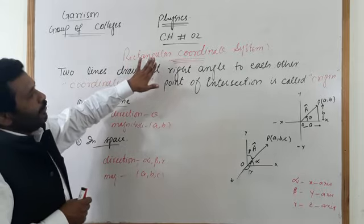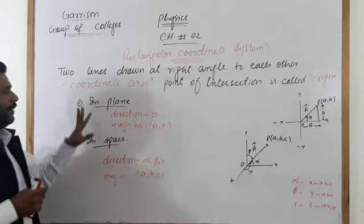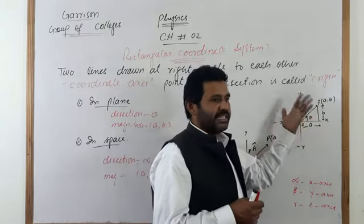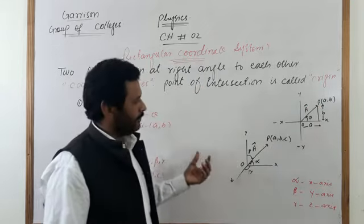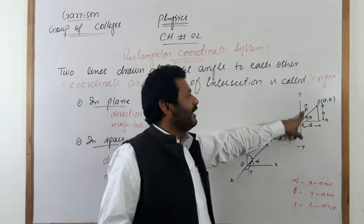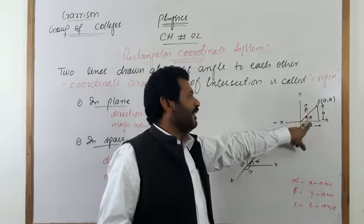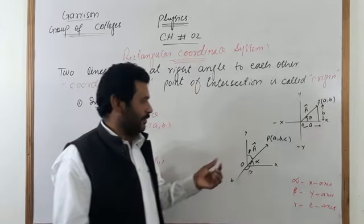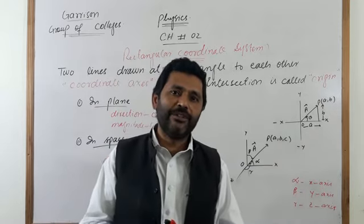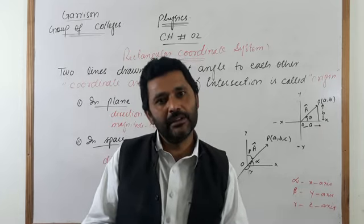The rectangular coordinate system is also used to describe the position of a point in a plane and in space. In a plane, we use two mutually perpendicular axes, x and y. In space, we use three axes: x, y, and z. The direction of a vector in a plane is represented by only theta, while in space it requires alpha, beta, and gamma. This is called the rectangular coordinate system.